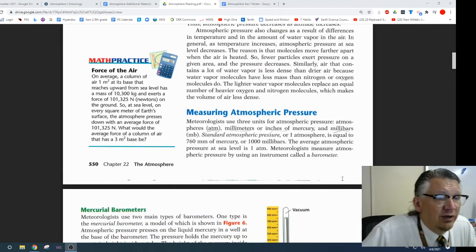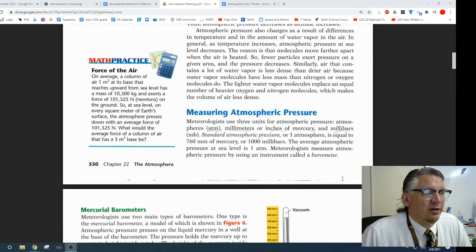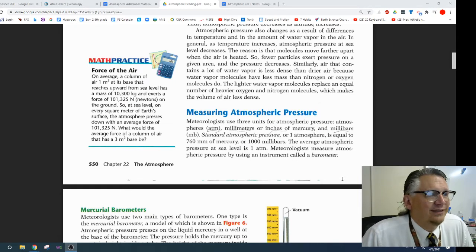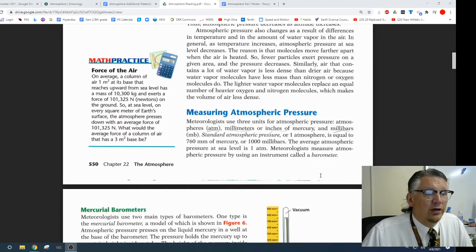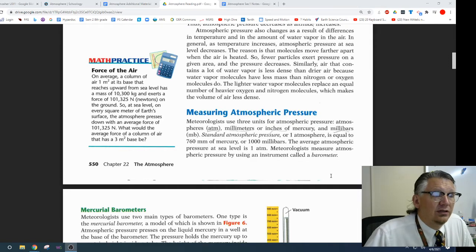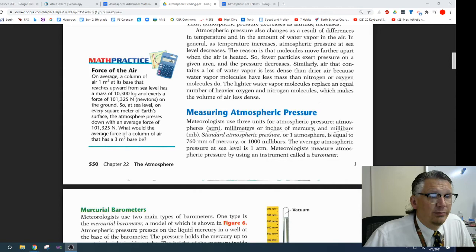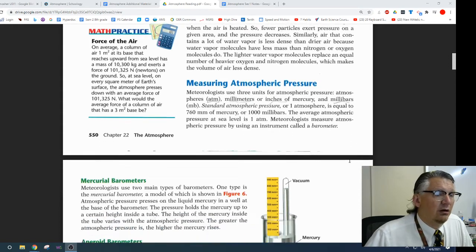Meteorologists use three forms of atmospheric pressure: atmospheres, millimeters or inches of mercury, and millibars. Standard atmospheric pressure, or one atmosphere, is equal to 760 millimeters of mercury, or 1,000 millibars. The average atmospheric pressure at sea level is one atmosphere. Meteorologists measure atmospheric pressure by using an instrument called a barometer.